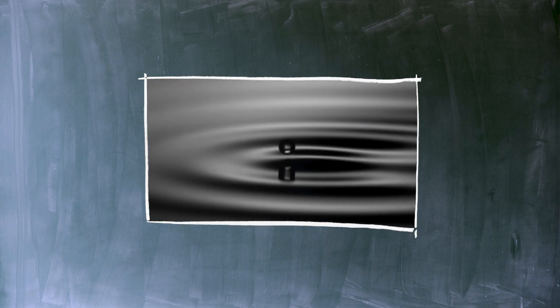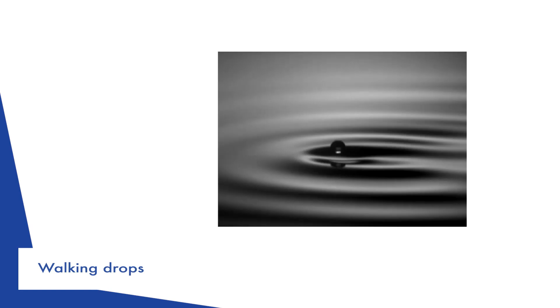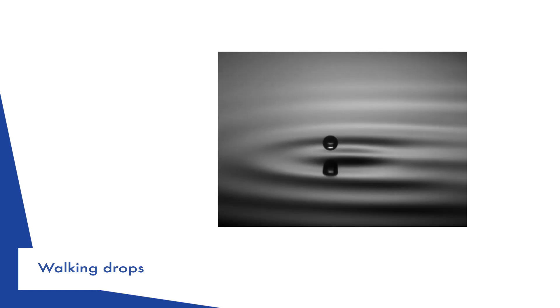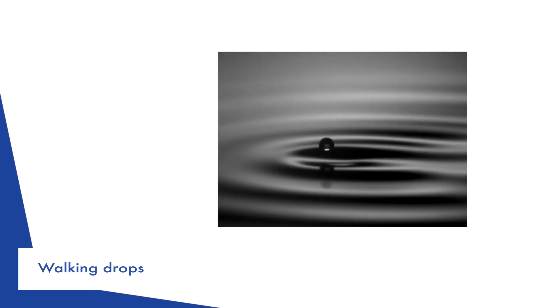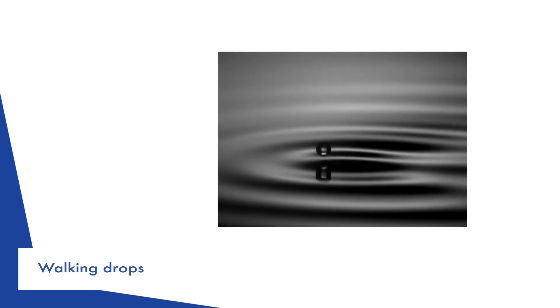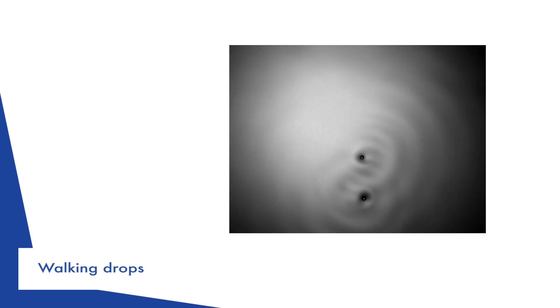Liquid drops bouncing on a vertically vibrated liquid bath start to move horizontally when the amplitude of vibration is large enough. The drop bounces slightly off the center of the wave pattern created by its own impact. The slope of the surface gives a forward momentum to the drop, which moves sideways in addition to its vertical oscillatory motion. The walker made of the drop and its associated wave, locked in phase, is a particle wave system exhibiting some remarkable characteristics, such as the quantization of orbits as we see when two walkers interact attractively.